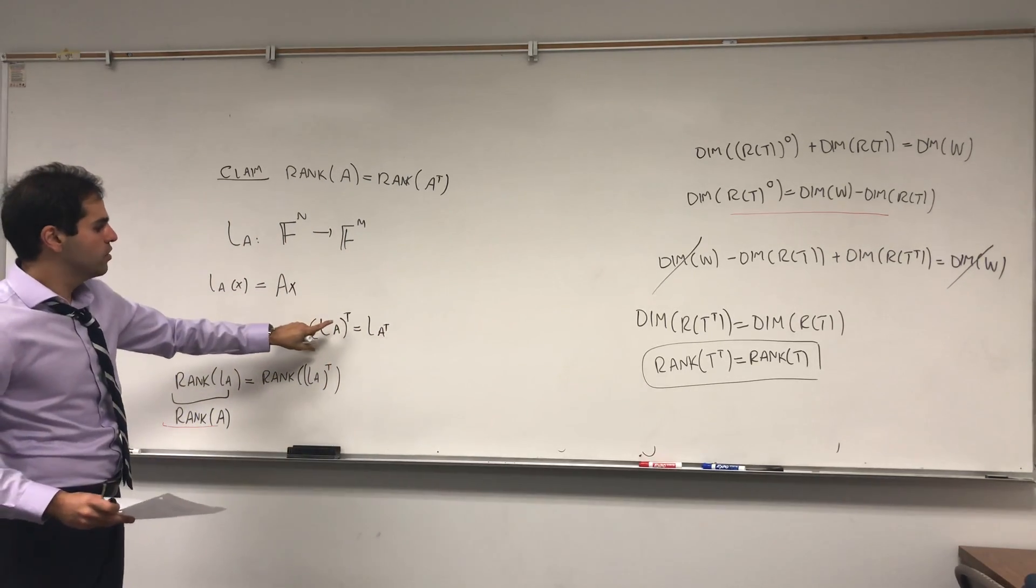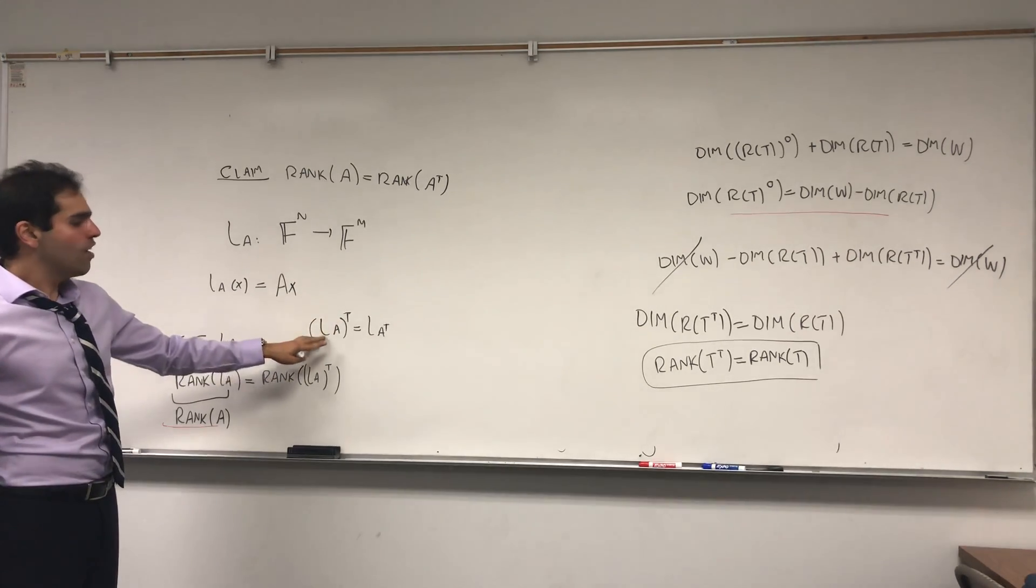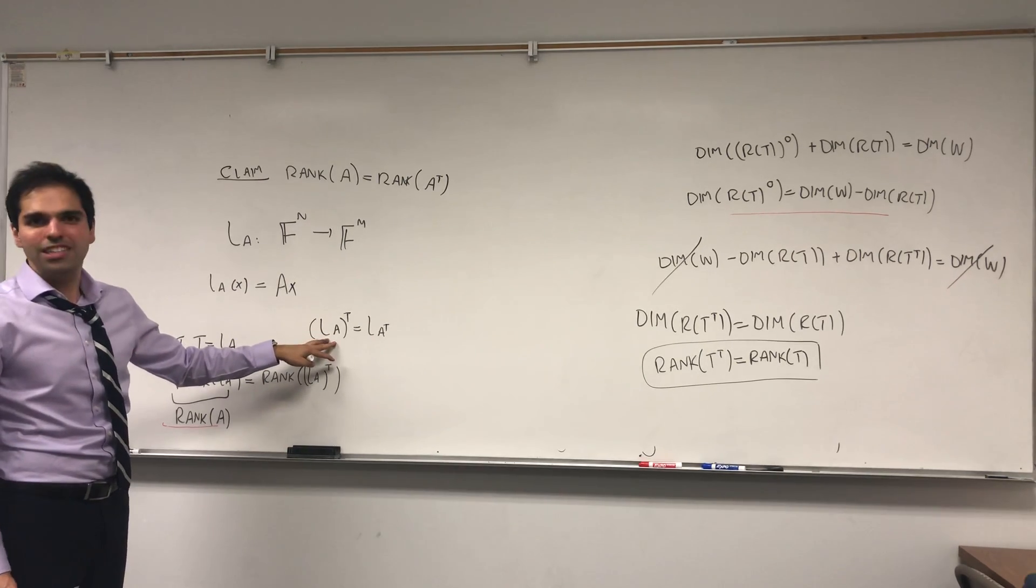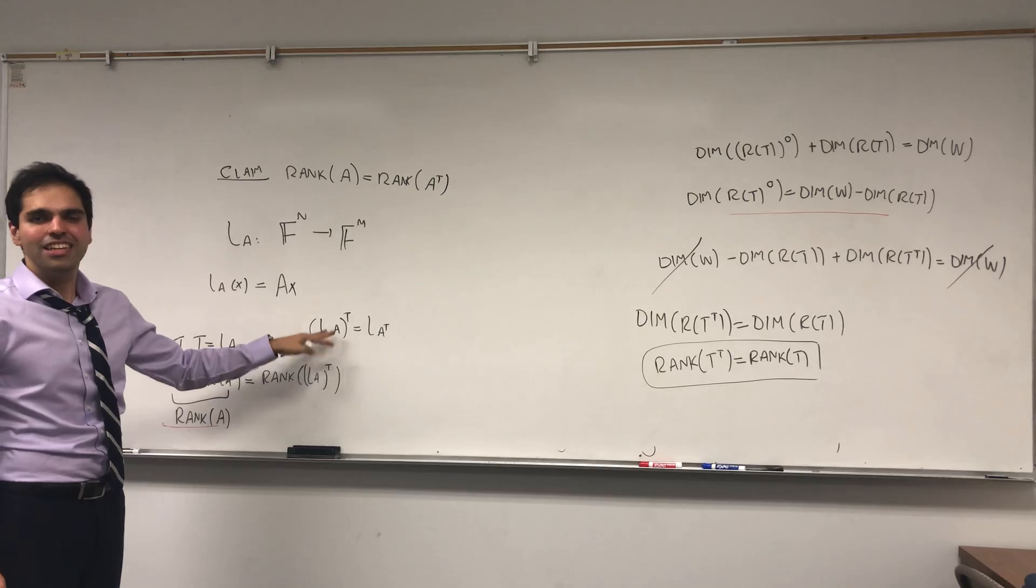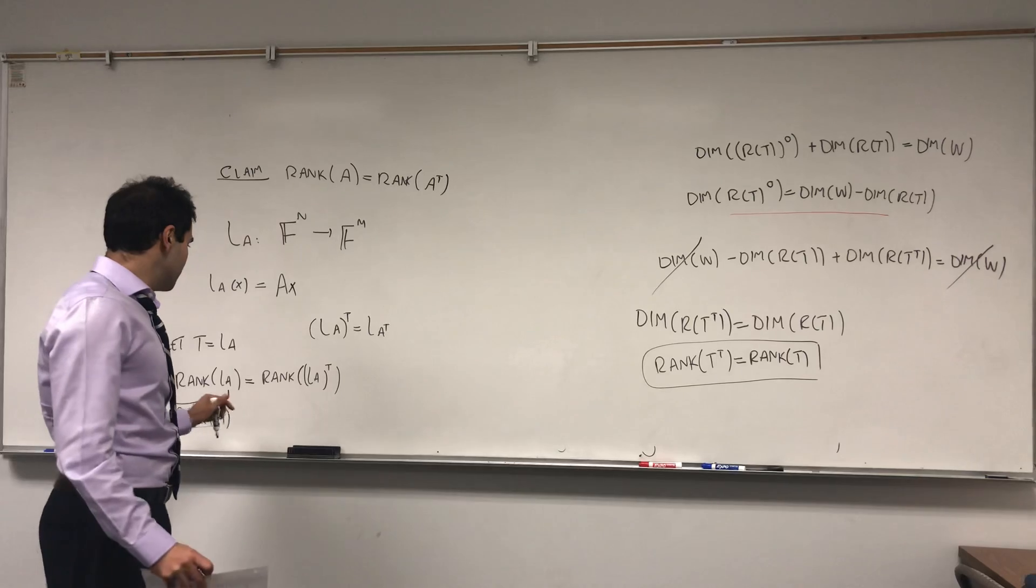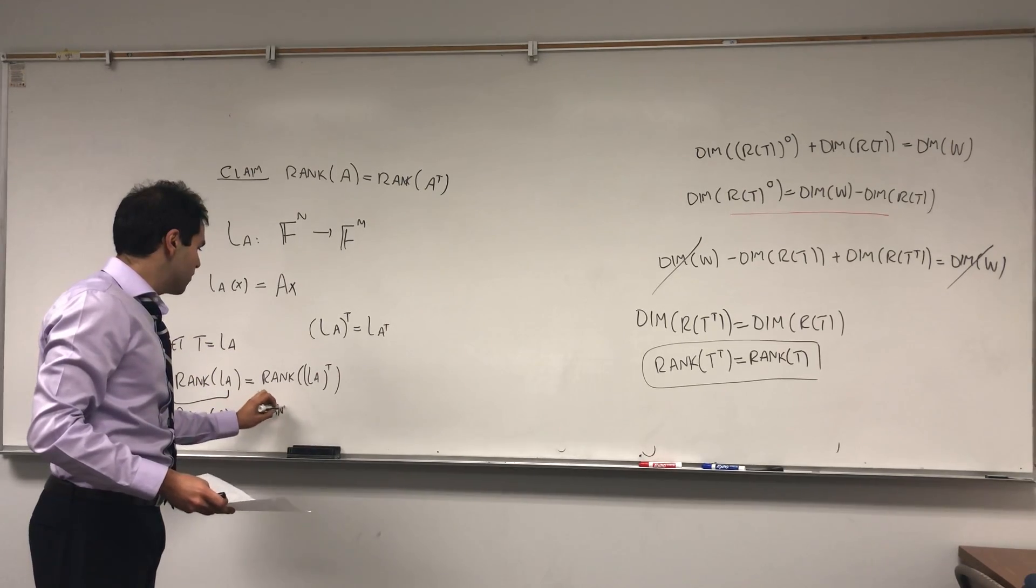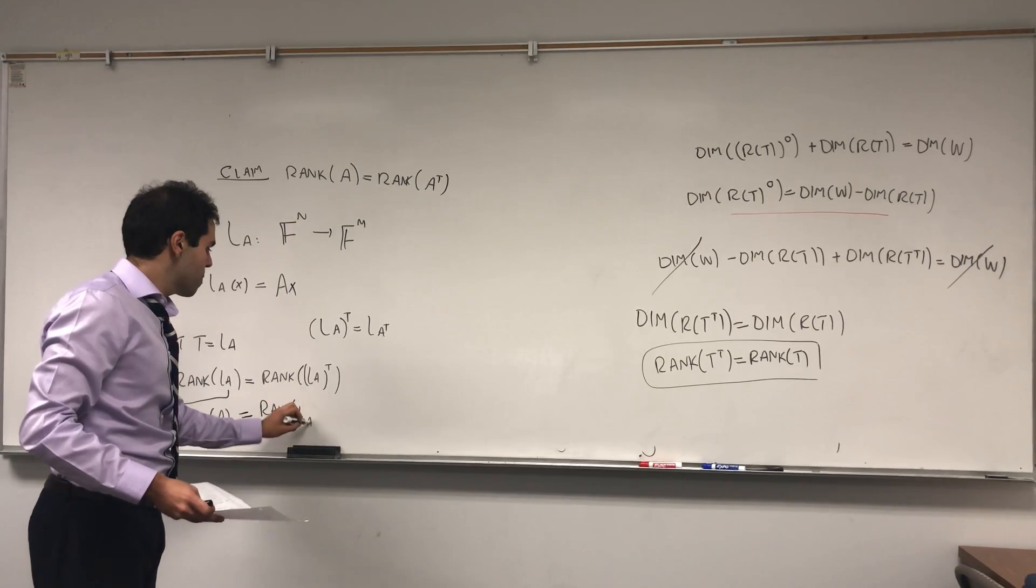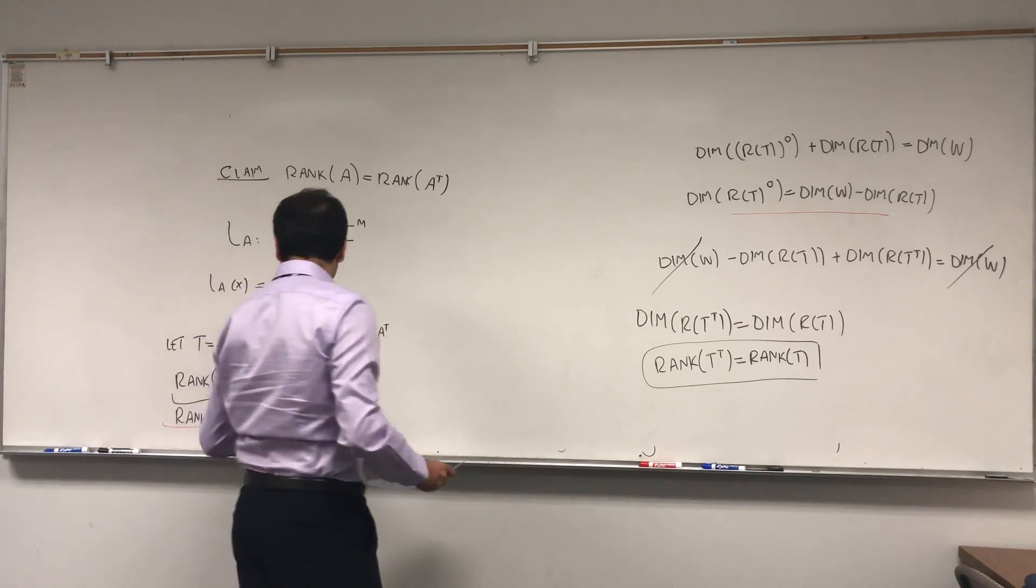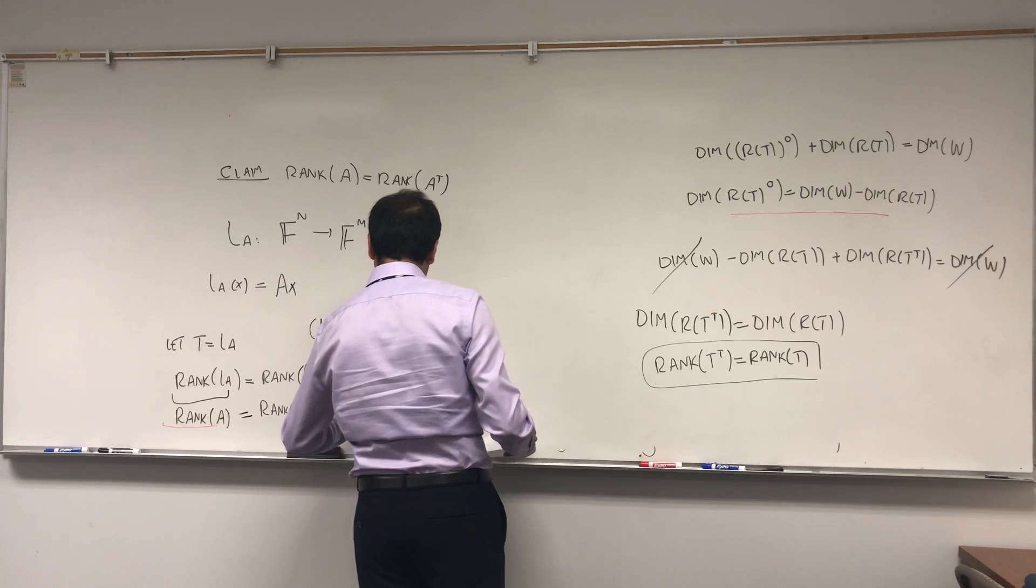I think you just use the fact that it follows because the matrix of the transpose of a linear transformation is the transpose of the matrix of a linear transformation, which I've done in a previous video. So, because this is true, we get rank of LA transpose. And, the rank of LA transpose, again, the rank of L of a matrix is the rank of that matrix. So, this is the rank of A transpose.